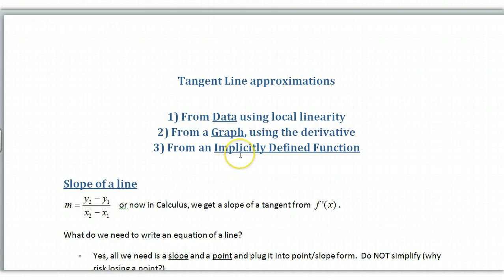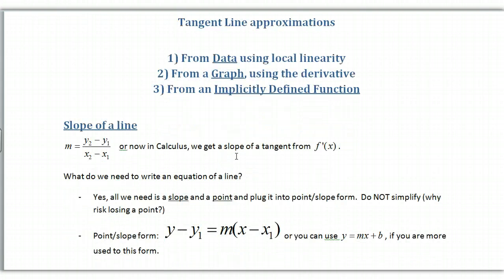What do we need to write the equation of a line? We need slope and a point. To get the slope, we can use regular algebra, y2 minus y1 over x2 minus x1, or from calculus we can use f prime.